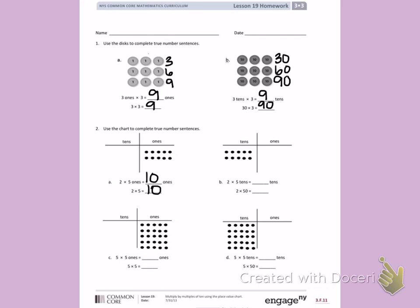In part B, I have 2 rows of 5 10's, giving me a total of 10 10's. 10 10's is another way of saying I need to count by 10 ten times. So I will count: 10, 20, 30, 40, 50, 60, 70, 80, 90, 100. 2 times 50 is 100.